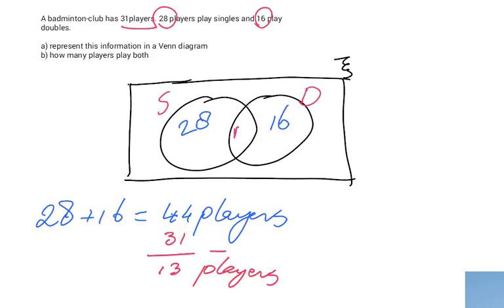13 players play both, so I'm going to put 13 in the middle. Then I'm going to change the 28 into 15 because I subtract the 13 from the 28. And I'm going to change the 16 into 3 because I subtract the 13 from 16. And as you can see now, 15 plus 13 is 28.